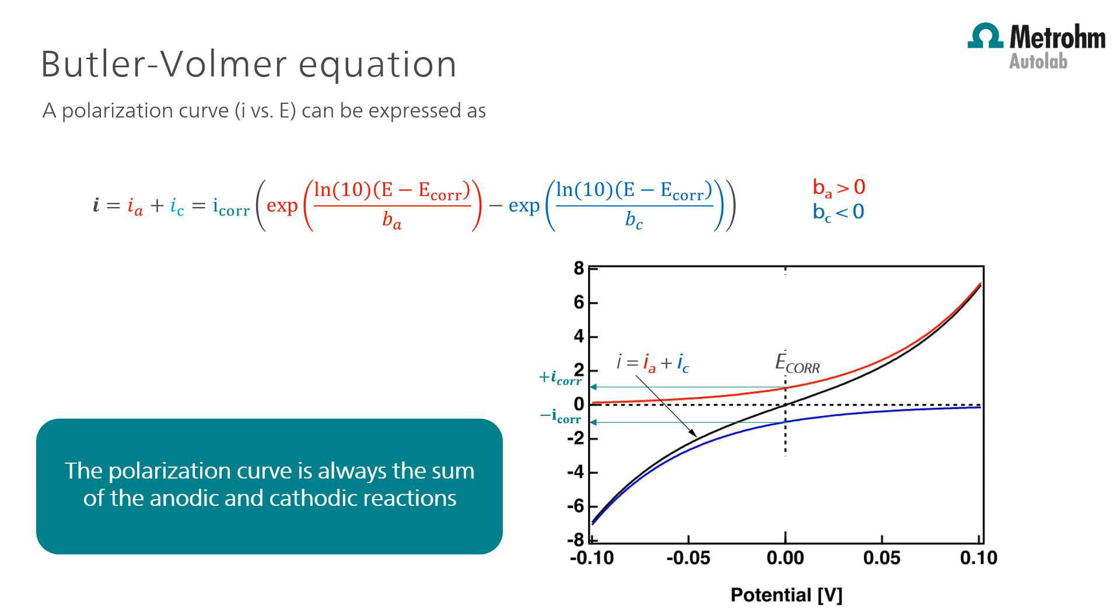Each current is expressed by this exponential term, which is called BA, anodic, and BC, cathodic. These are called the Tafel slopes. In red, the anodic current part, you cannot measure that by itself. In blue, the cathodic current part, which you also cannot measure by itself. What we measure is always the sum of two reactions.